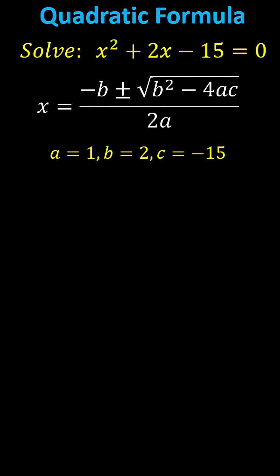This indicates a equals 1, b equals 2, and c equals negative 15. And now we substitute these values into the quadratic formula, which gives us x equals negative 2 plus or minus the square root of the difference of the square of 2 and the product of 4, 1, and negative 15, all divided by the product of 2 and 1.